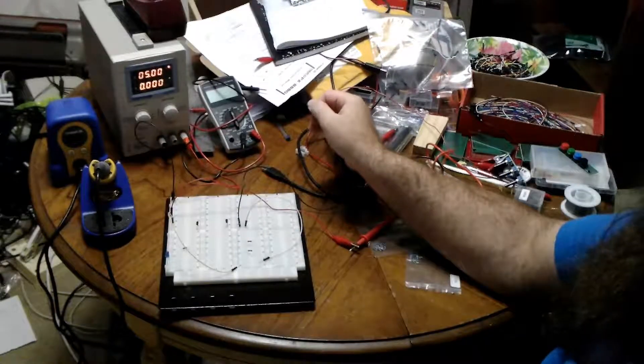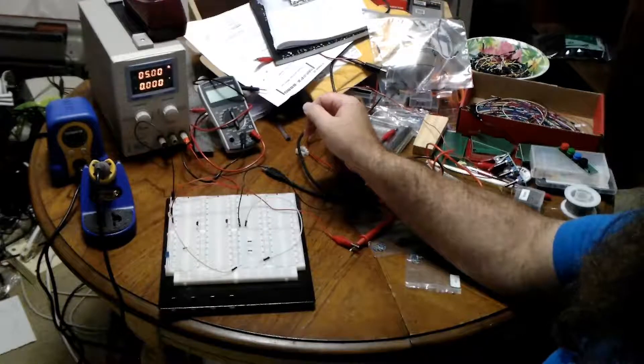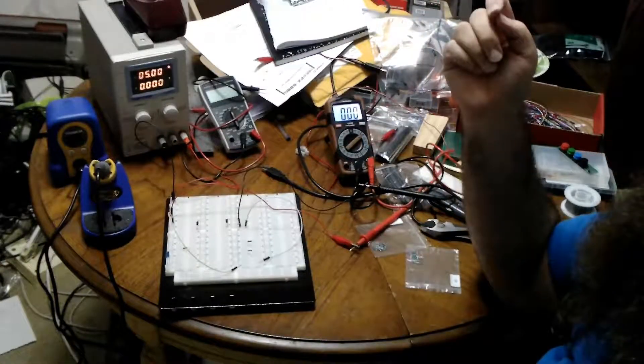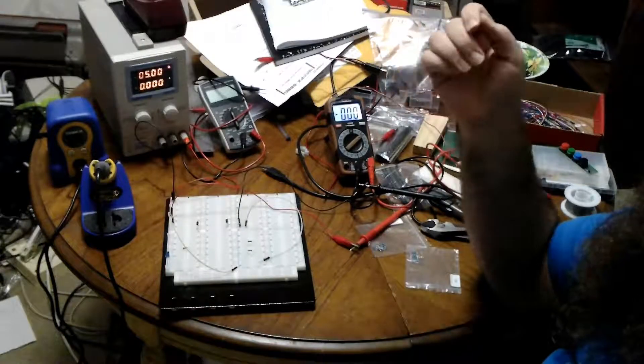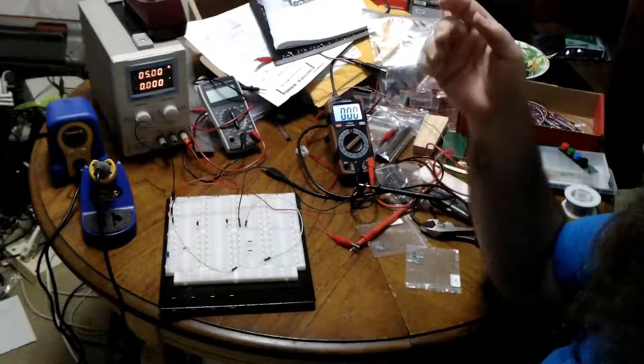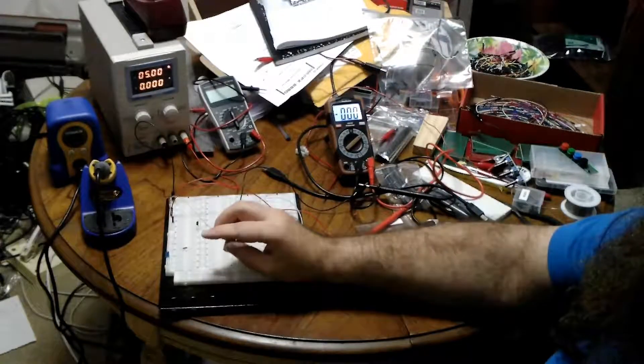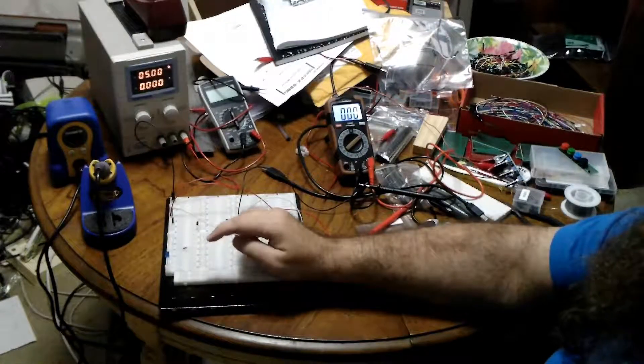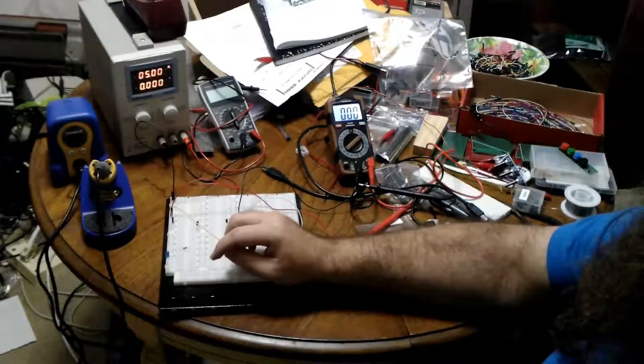Because if beta is 100, let's say we get the full six microamps through. Let's say we get 10 microamps. So that's times 100 is 100 microamps, 1000 microamps, which is one milliamp. And a nice bright LED is going to draw at least five, let alone whatever other load you've got going through there. That's why Darlington for a touch switch.